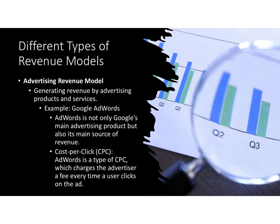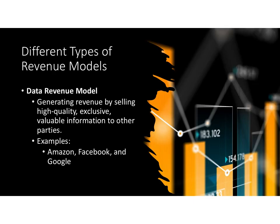Advertising revenue is huge. If you are selling a product, you should also try to generate some advertising revenue — look at Google AdWords and cost per click (CPC). The data revenue model is another example: Facebook and other social media platforms collect your data and sell it to others for profit. They make money not just from ads but also through the sale of user data.